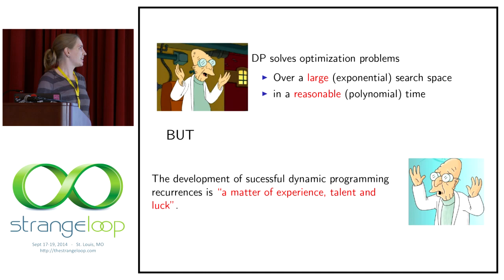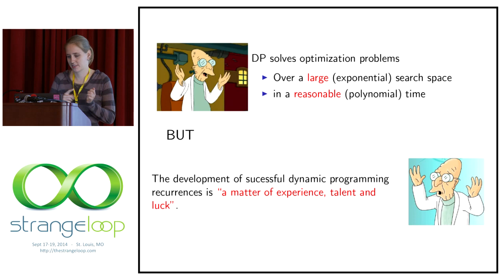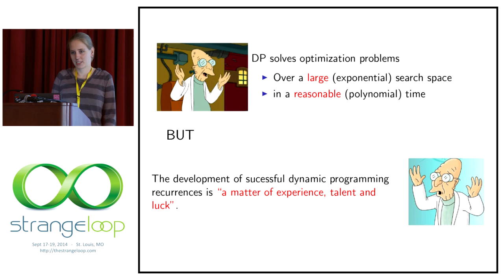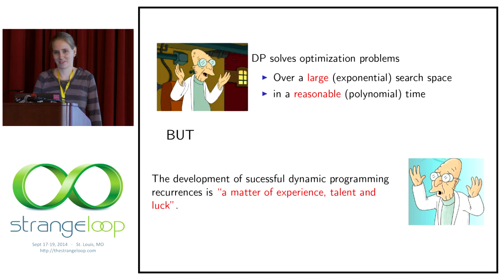Good news: dynamic programming solves optimization problems over a large — that means exponential — search space in a reasonable amount of time, which means polynomial, so it's tractable by a computer. But there's a huge but: the development of successful dynamic programming recurrences is a matter of experience, talent, and luck. This kind of problem was really small — just one-dimensional — but imagine the table could be two-dimensional or even four-dimensional, or we could have multiple tables, and then it just gets really hard.